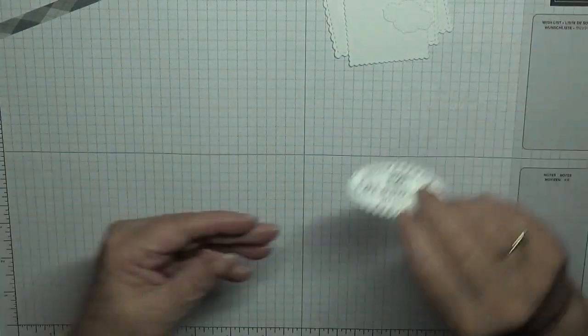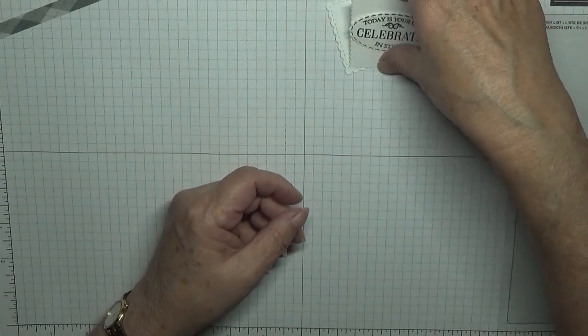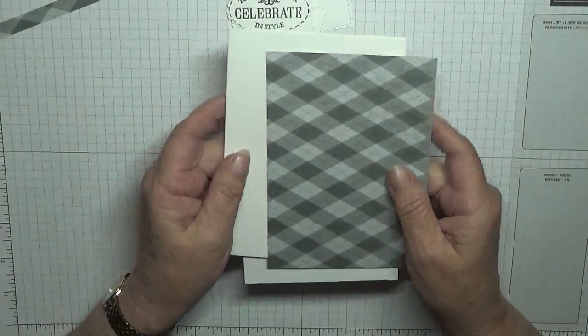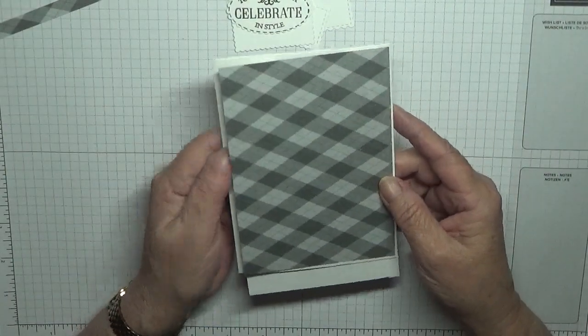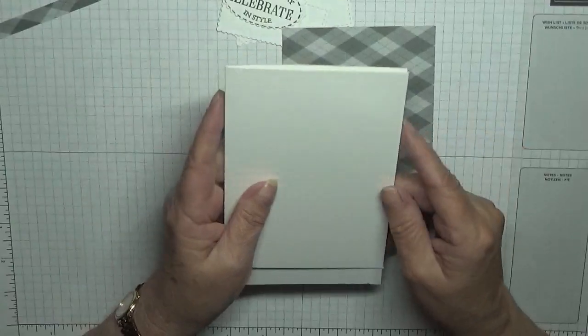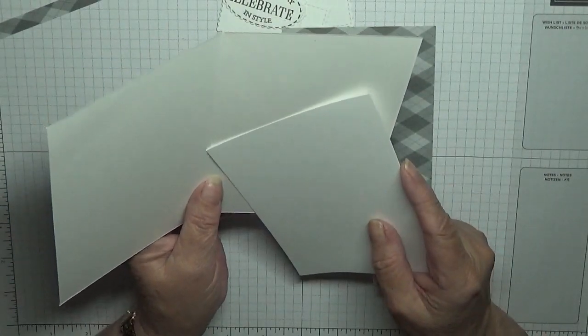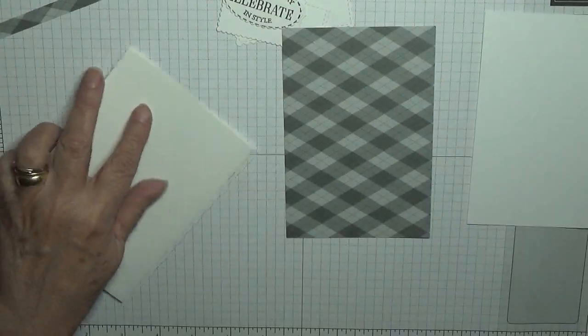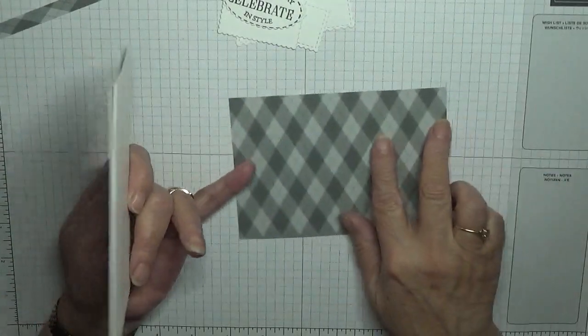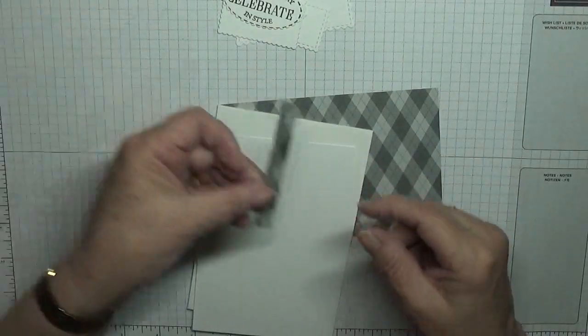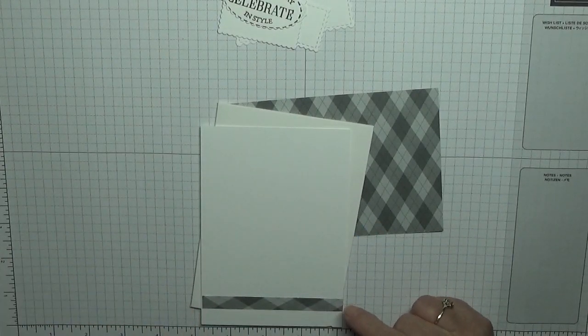I've already stamped the sentiment because I needed to cut it out while it was stamped. The paper I'm using is from the Clubhouse paper, the golfer, and this is five and five-eighths by three and seven-eighths. I have a card front of five and seven-eighths by eight and a quarter, scored at four and one-eighth, folded in half and burnished. And I've also got a piece for inside.